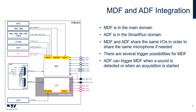This slide shows the integration of MDF and ADF in STM32U5. MDF is in the main domain, while ADF is located in the smart run domain for low-power applications. Thus, the ADF can run autonomously in Stop 2, and an interesting use case is a wake-up request from ADF in the case of voice detection. Some pins are shared between MDF and ADF in order to share the same microphone if needed. MDF can be triggered by several peripherals such as timers and EXTI. ADF can trigger MDF when a sound is detected or when an acquisition is started. Trigger details are explained later in this presentation.